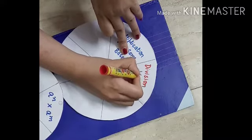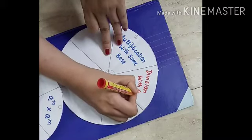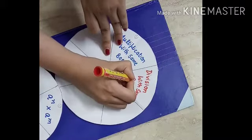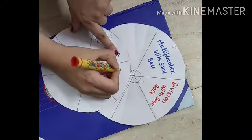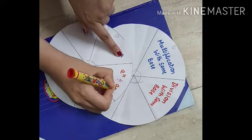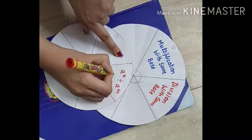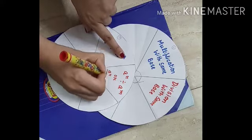Moving ahead, I have to repeat the same with the other six rules. The second rule says division with the same base. I'll write the formula on the next circle: a raised to power n divided by a raised to power m will give me a raised to power n minus m.